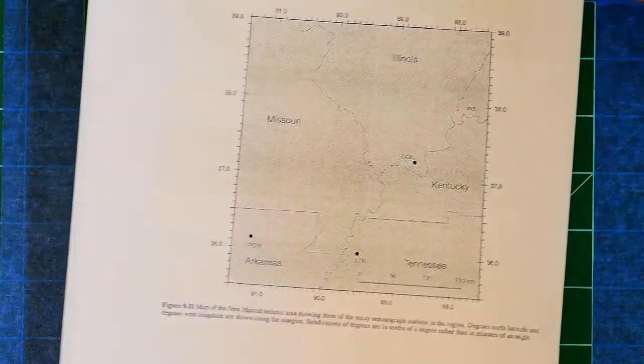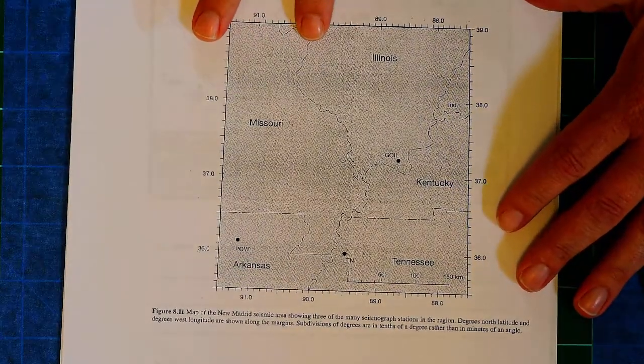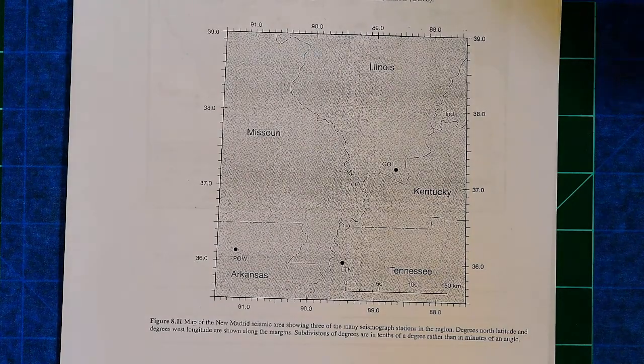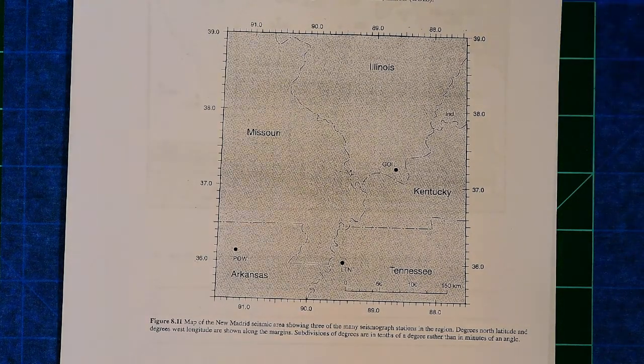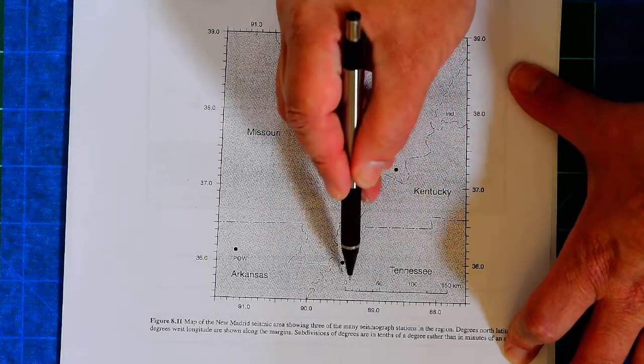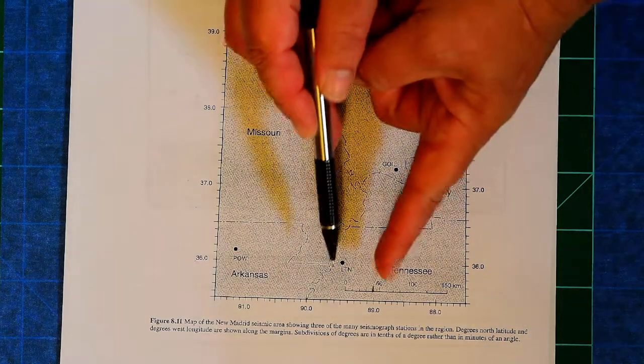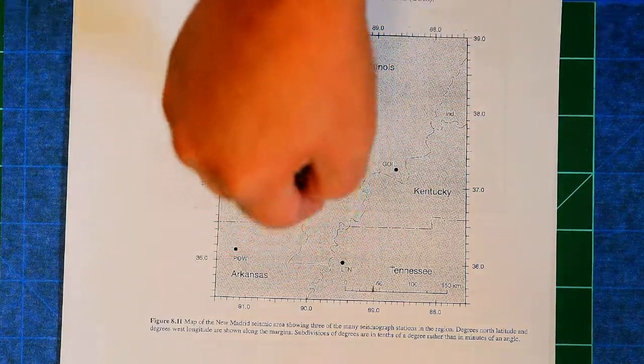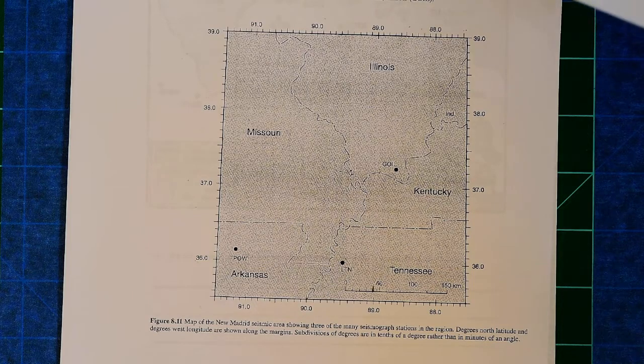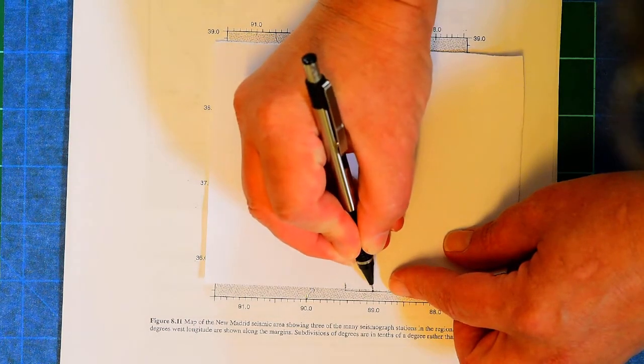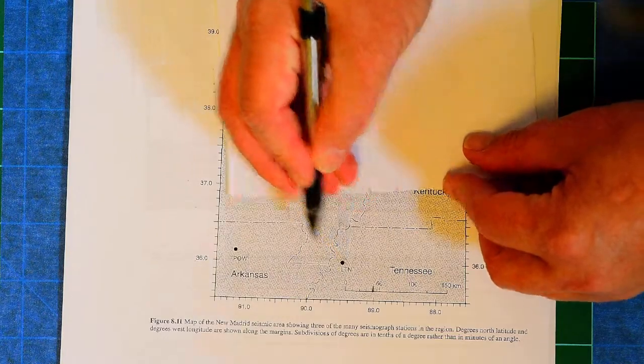Additional problems that you will have with this include then locating the epicenter of that earthquake. You have this. And remember, we just calculated LTN's distance to the earthquake. Here's a scale, and we figured out it was 40 kilometers away. Now, if you happen to have a compass, you'll just set the compass to do 40 kilometers and draw a circle. I know some of you don't have compasses at home. So you can just take a piece of scrap paper. And you can say, all right, there's zero. There's 40 kilometers. There's LTN.